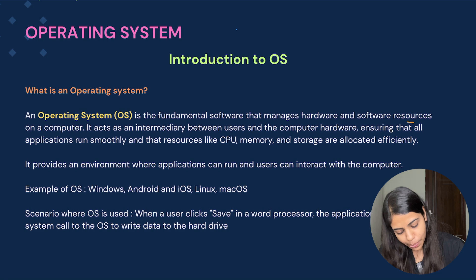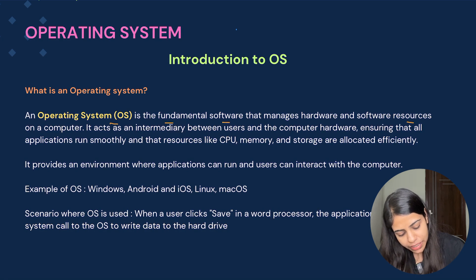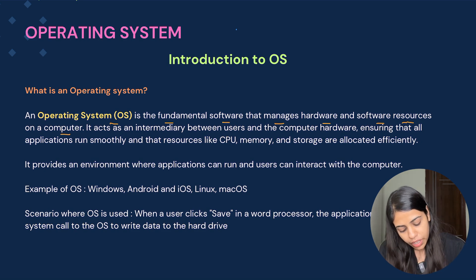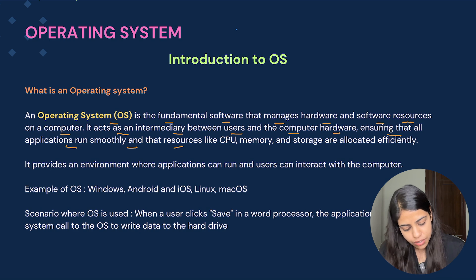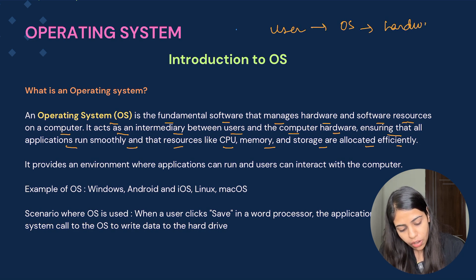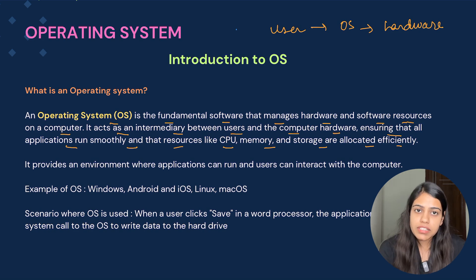So what is an operating system? An operating system is the fundamental software that manages hardware and software resources on a computer. Whenever someone wants to manage all the hardware and software resources, they use the operating system. It acts as an intermediary between the user and the computer hardware, ensuring that all applications run smoothly and that resources like CPU, memory, and storage are allocated efficiently.